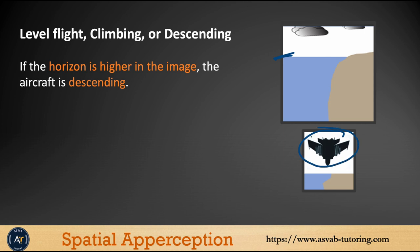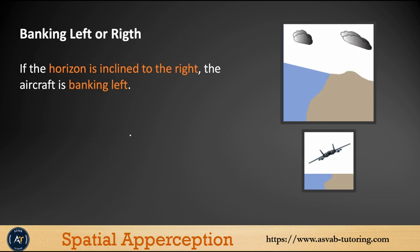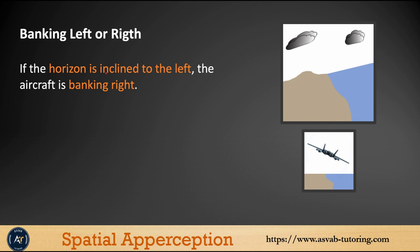Next, if the aircraft is banking left or right — if the horizon is inclined to the right, the aircraft is banking to the left. You can see the direction the aircraft is going. If the horizon is inclined to the left, the aircraft is banking to the right. You can see here the inclination to the left means the aircraft is moving to the right.